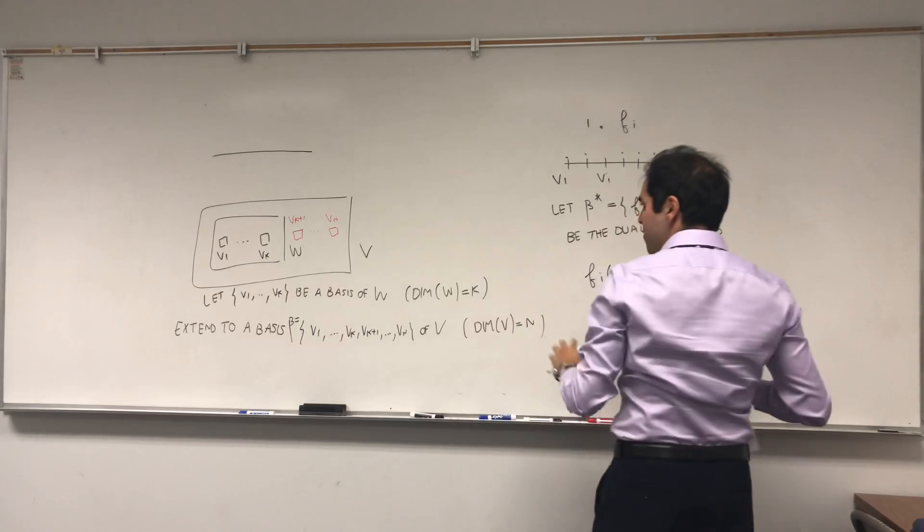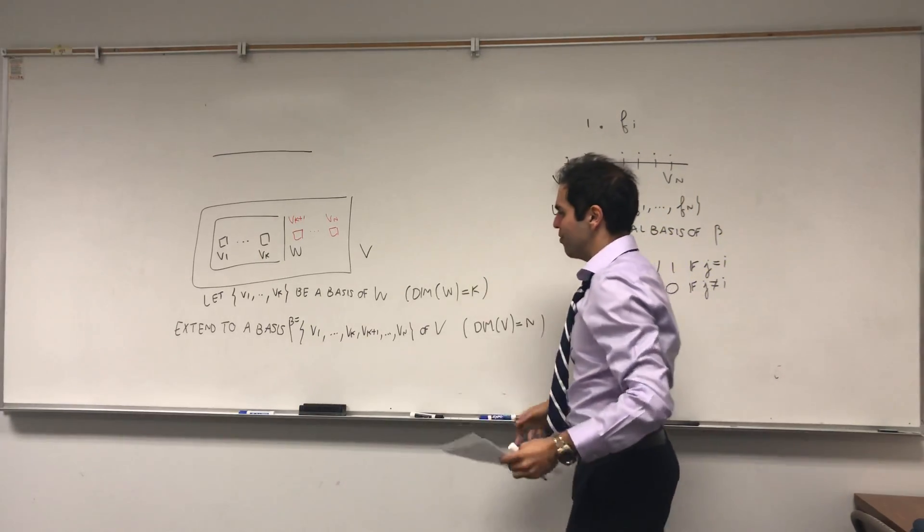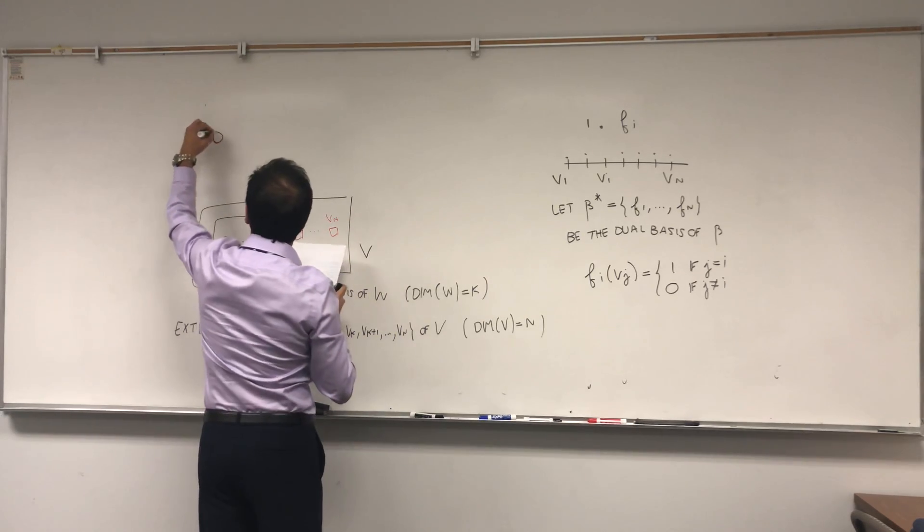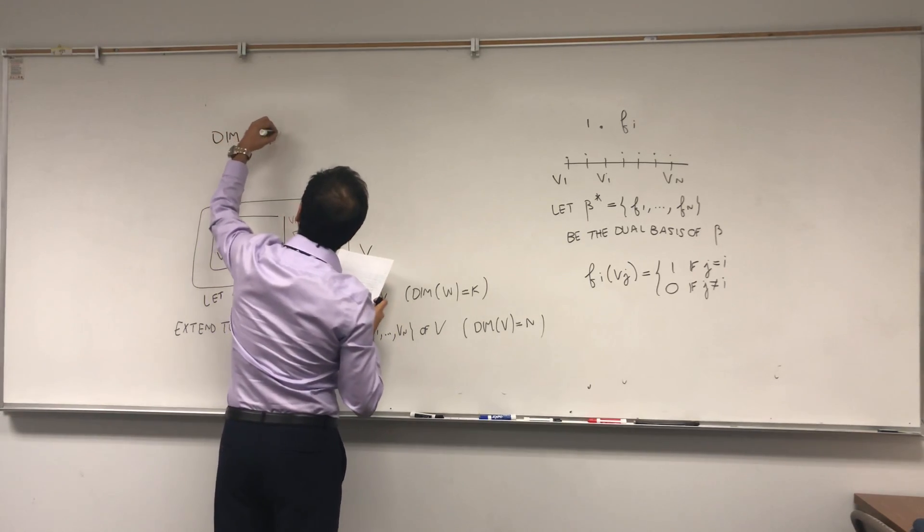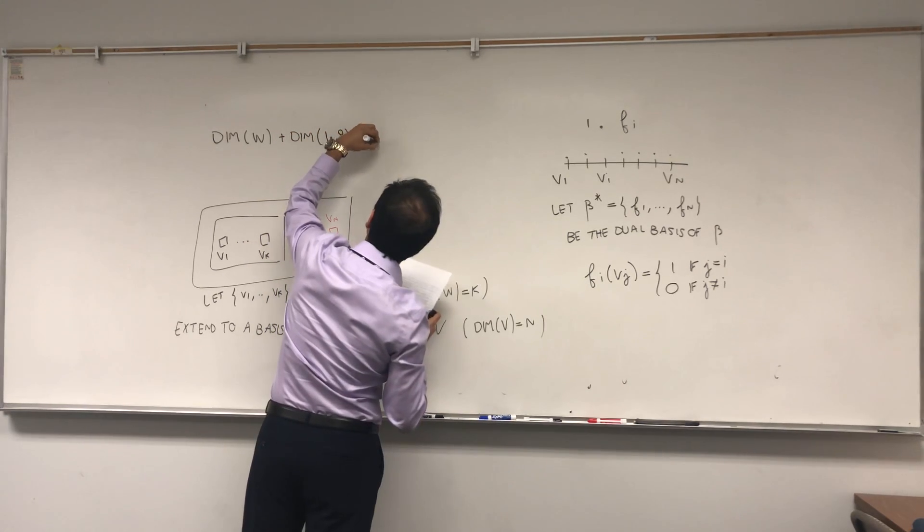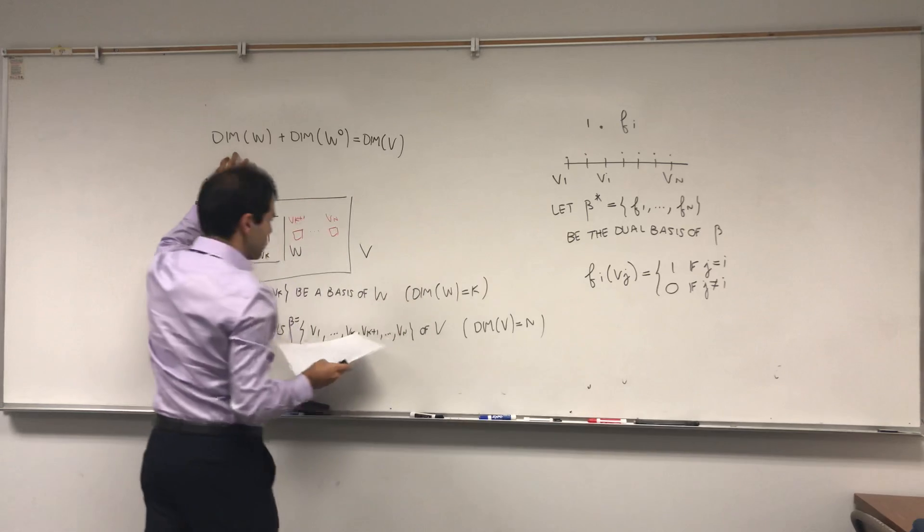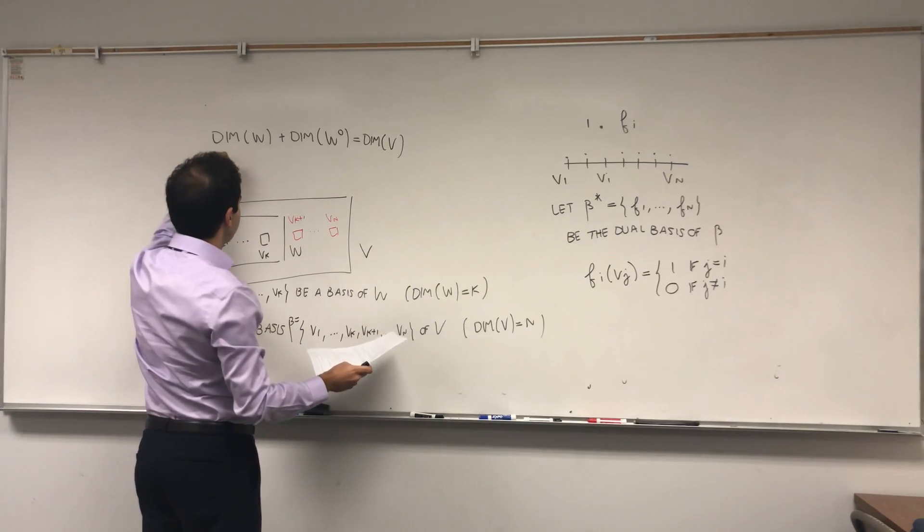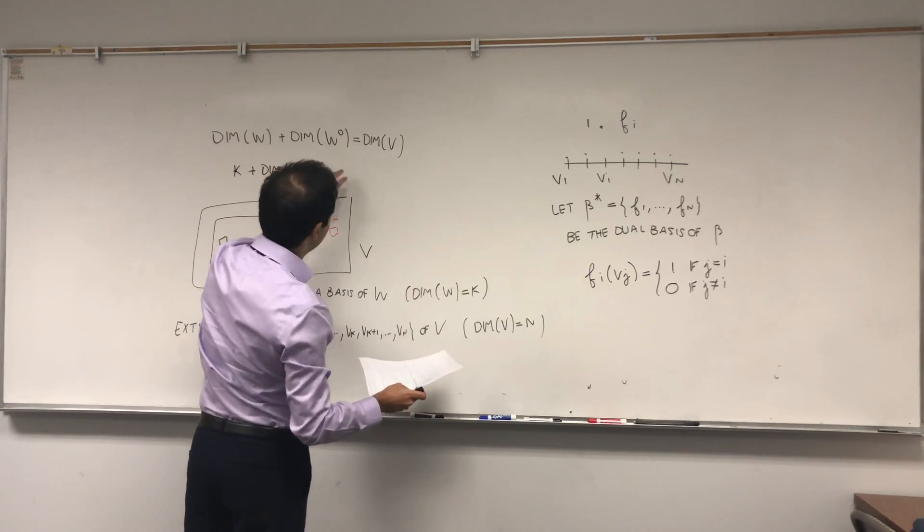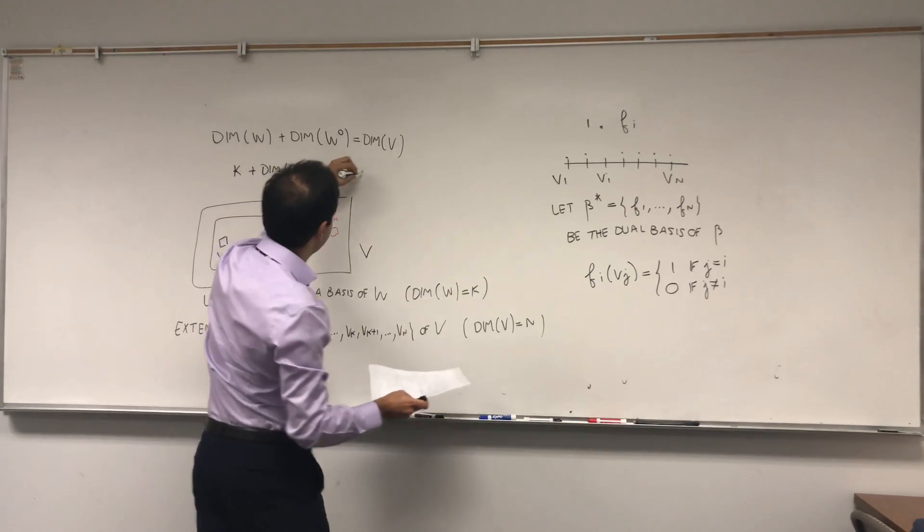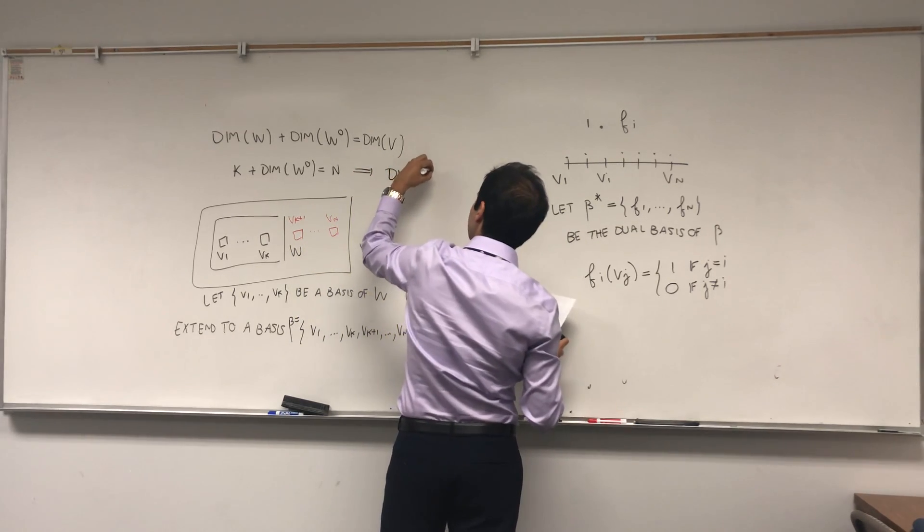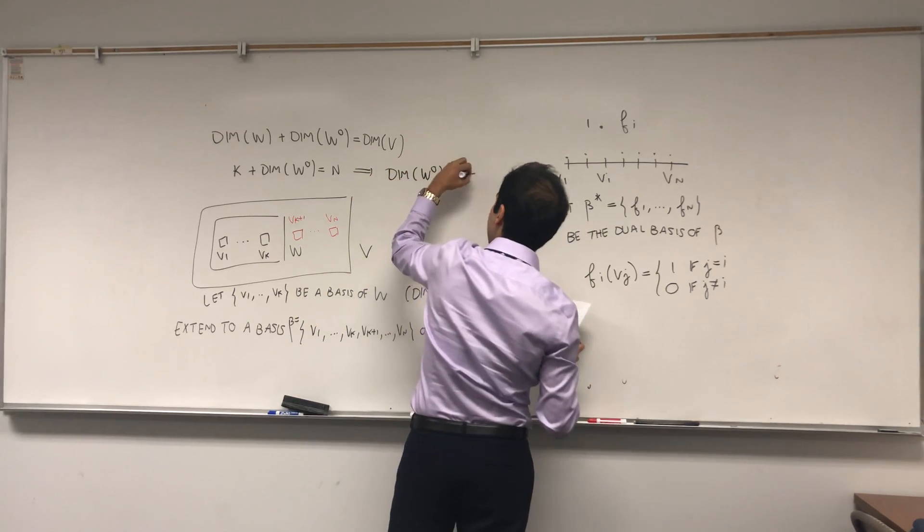And so let's see what those Fis do to your vectors. So how can I say this? Oh yeah, okay. Here's my claim. I'm claiming that, well, first of all, what do we want to show? So remember, we want to show that the dimension of W plus the dimension of W naught equals the dimension of V.